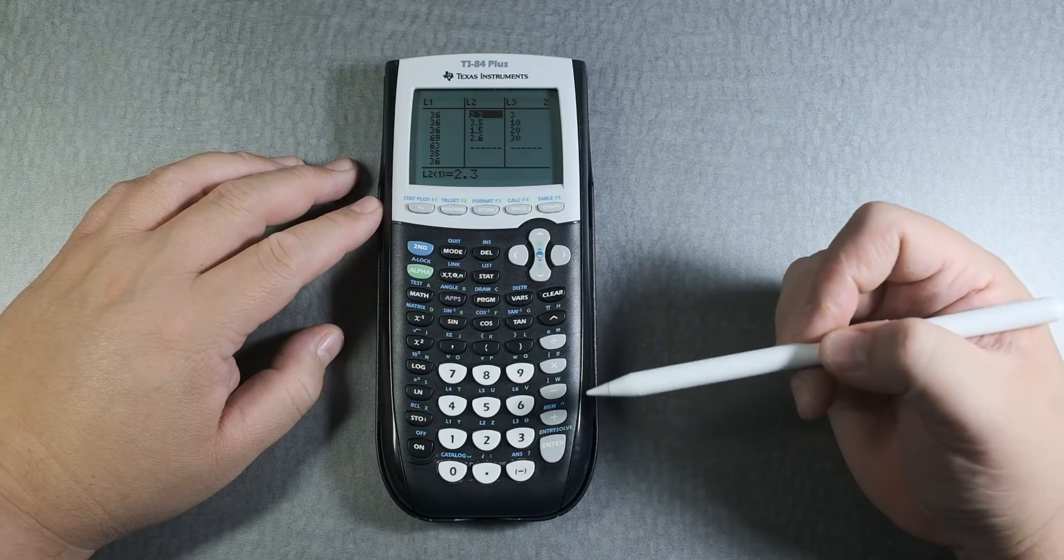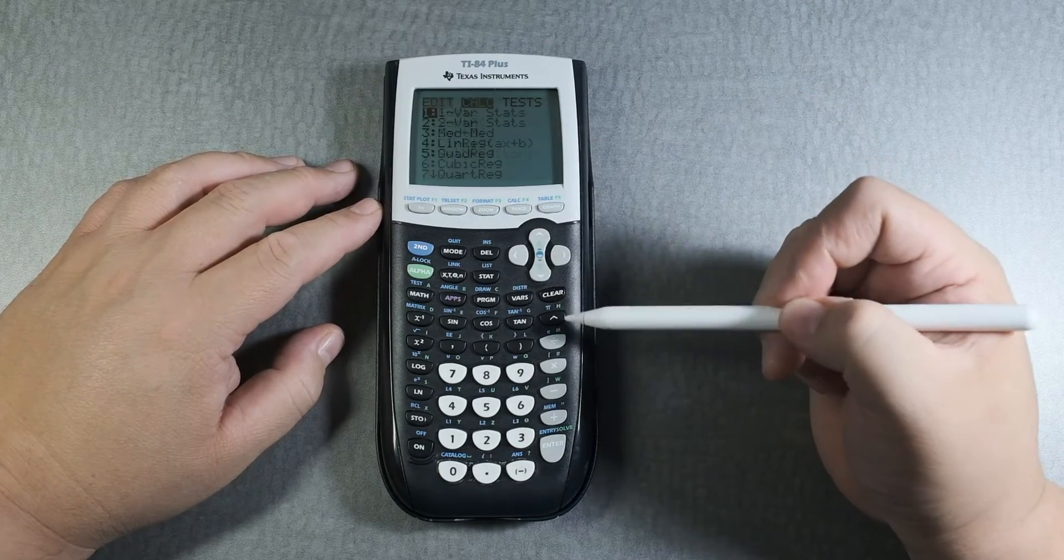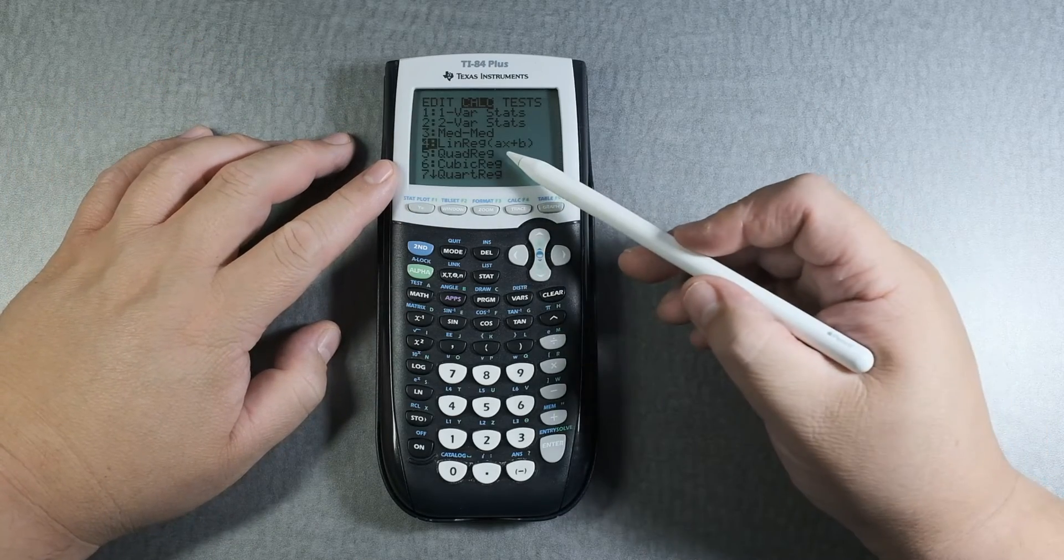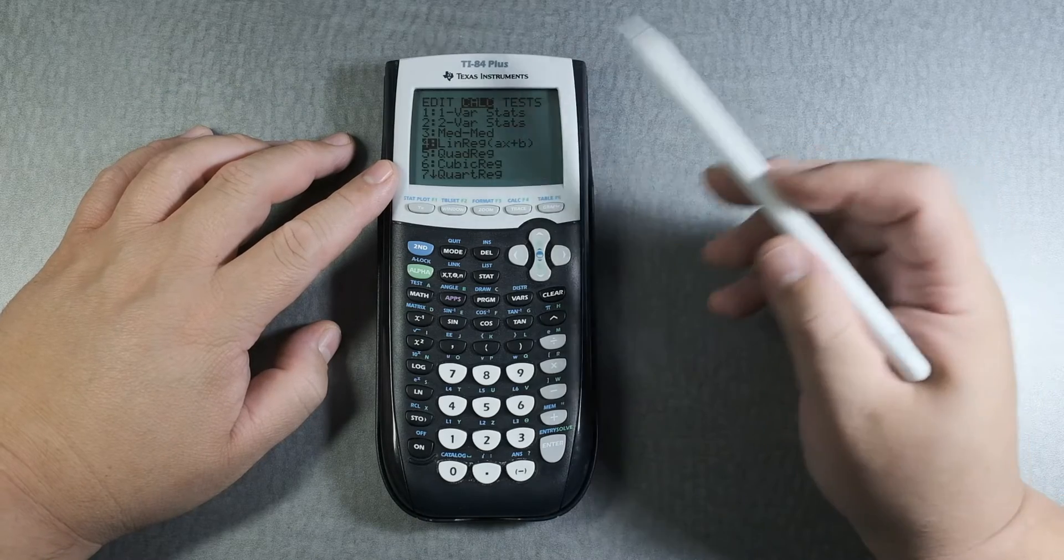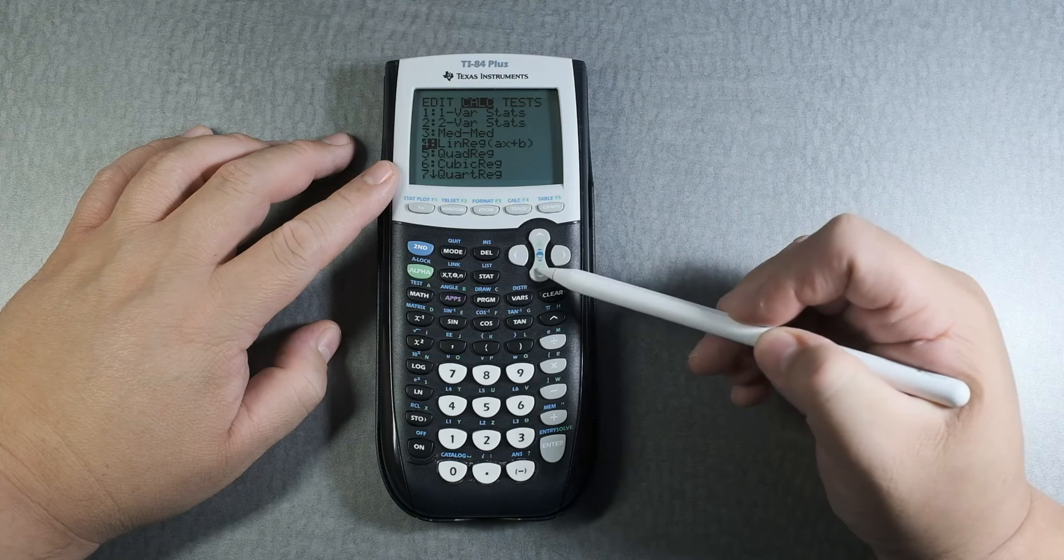Type in the information, click on Stat, click over to Calc. Here it depends on your teacher if you learned it as ax plus b, where a is the slope and b is the y-intercept.